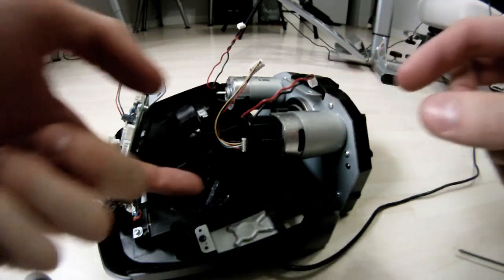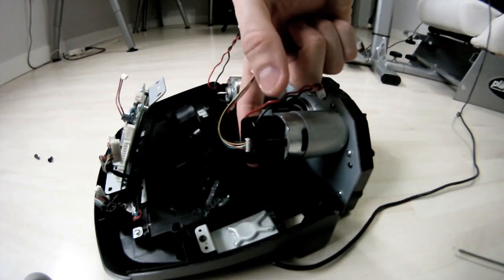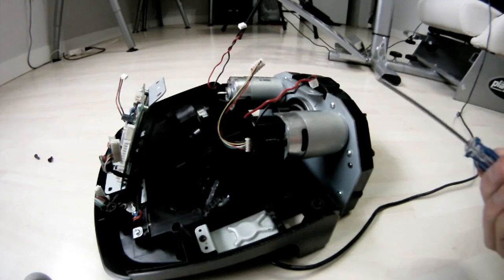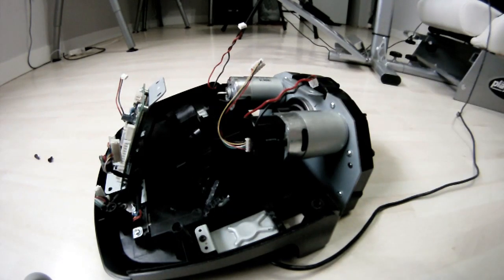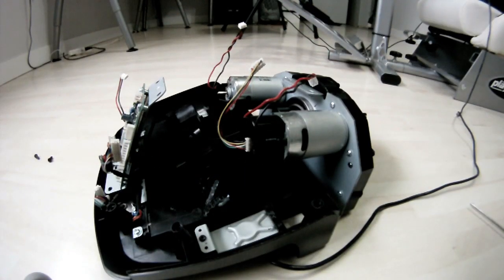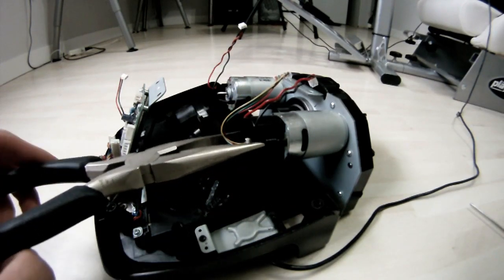You can either pinch it at the sides here and lift, or take a flathead screwdriver and pop it off from each side. You can even use some needle nose pliers and grip it as well as you can and slowly wiggle it off.